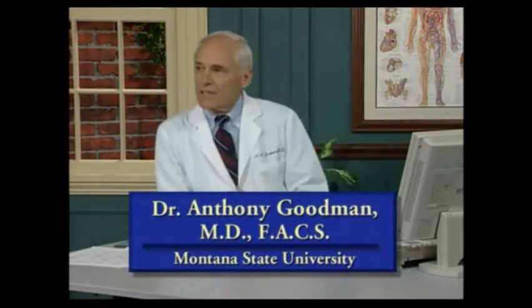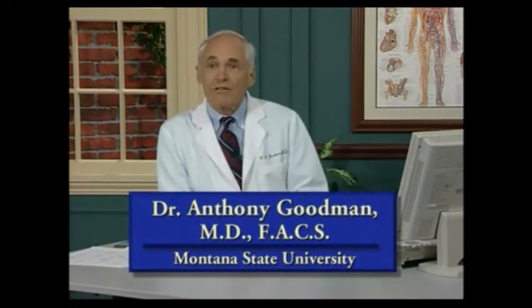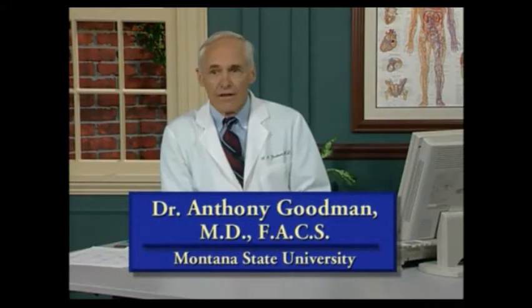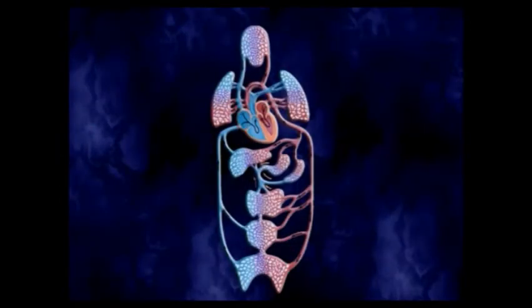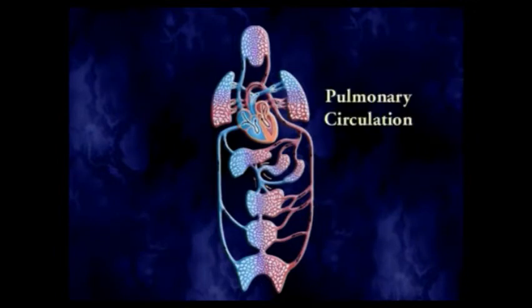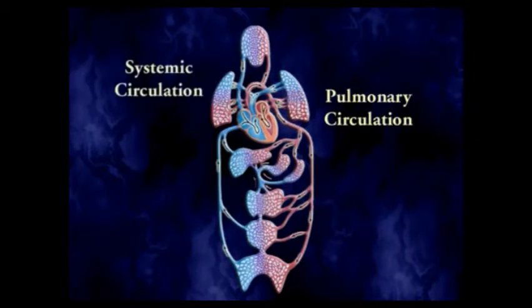Welcome back. Today we're going to continue with the natural extension of what we talked about in the anatomy of the heart — the cardiovascular system — and begin to look at the vessels as they go from the heart to the rest of the body. Here we have the heart in the middle, the pulmonary circulation, and then the systemic circulation going out the aorta — about 20% going up to the head and brain, and the rest to the body.